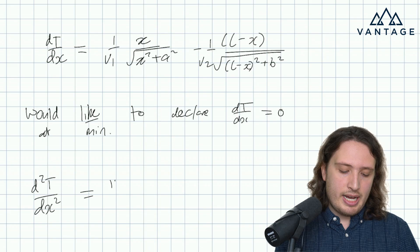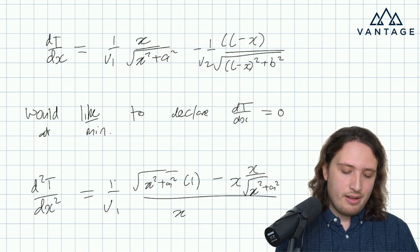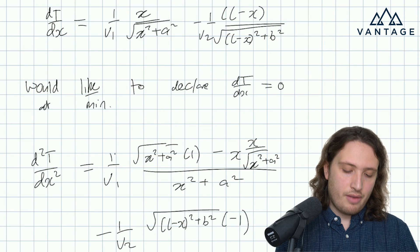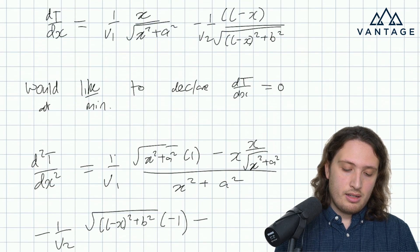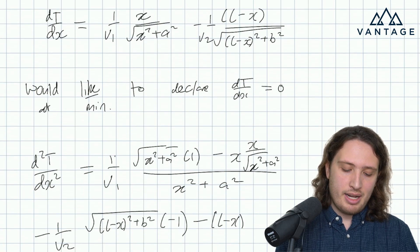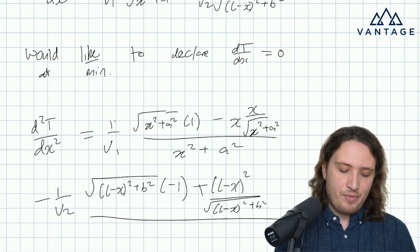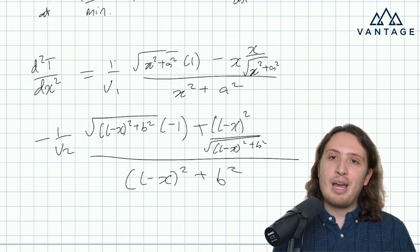We can use the quotient rule. On the first term, that gives us low d-high minus high d-low over the square of what's below. For the second term, the same principle applies. The numerator of the second term is: low d-high, where the derivative of (l minus x) is minus one, minus high, where the numerator is (l minus x). D-low came with a minus sign, so minus minus makes plus (l minus x) over the square-rooted expression. That's all over the square of what's below — so squaring gets rid of the square root.